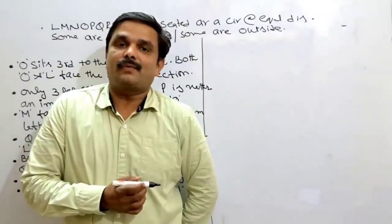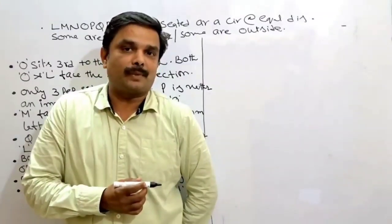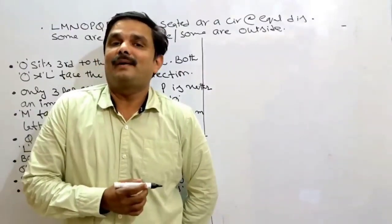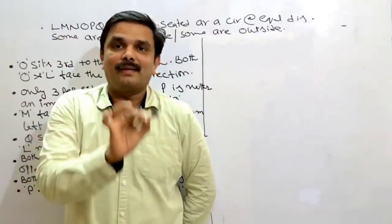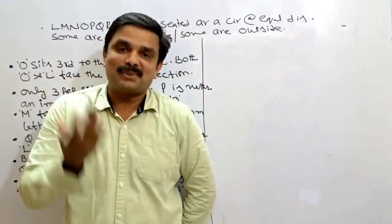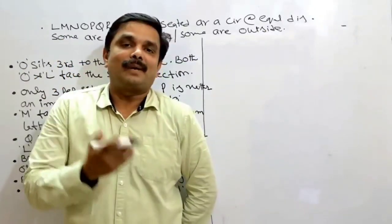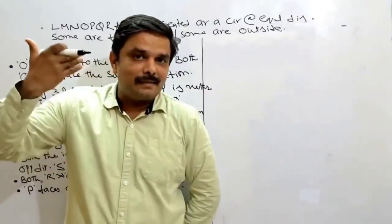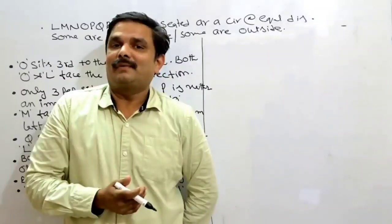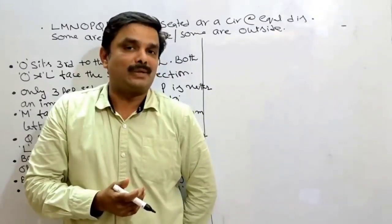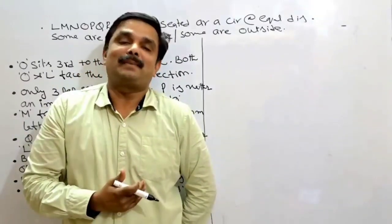Before four or five years, questions used to be very simple from this chapter. They used to give it in this way: suppose eight persons are seated around a circular table, rectangular table, or square table, and generally all were facing the center. But after that they changed the pattern, increased the difficulty level, and now we need to solve the puzzle based on other parameters also.